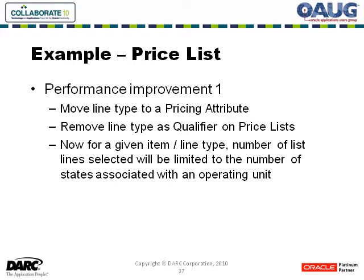Rather than having an item that appears on 200 to 250 price lists, now we have the combination of item and rate type defined at the line level, and that limits us to the states within that particular operating unit — which typically was 10 to 15, in some cases even smaller.